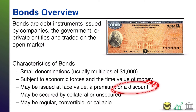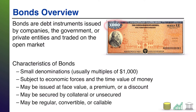Or you could have the opposite happen. Your bond may be unattractive — it may pay less interest than investors' alternatives. When that's the case, investors won't be willing to give you the face value; they're going to give you less than that face value. And that's what's called a discount.